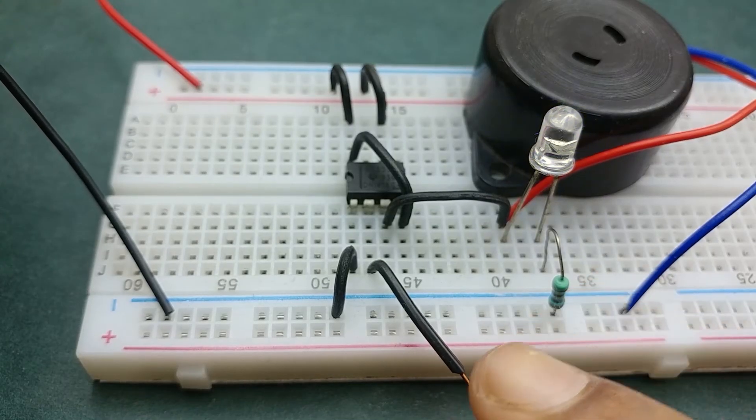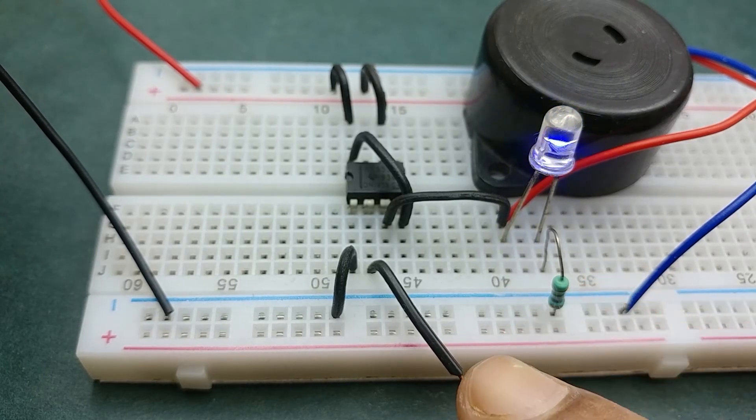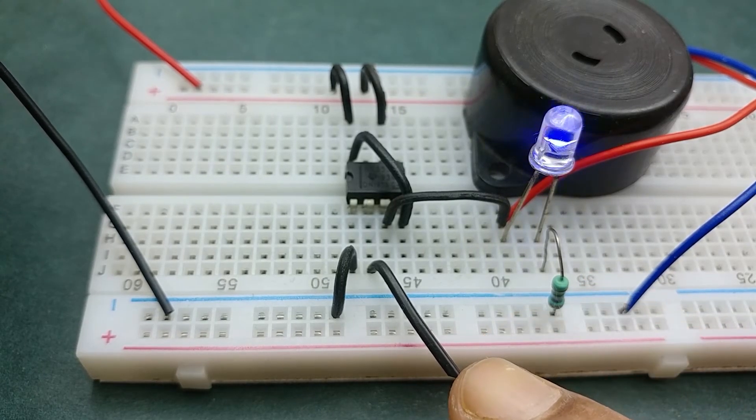So far, the circuit detects electrostatic charges and tiny voltages applied at pin 2. Now we want the circuit to stay on continuously immediately after it detects a contact.